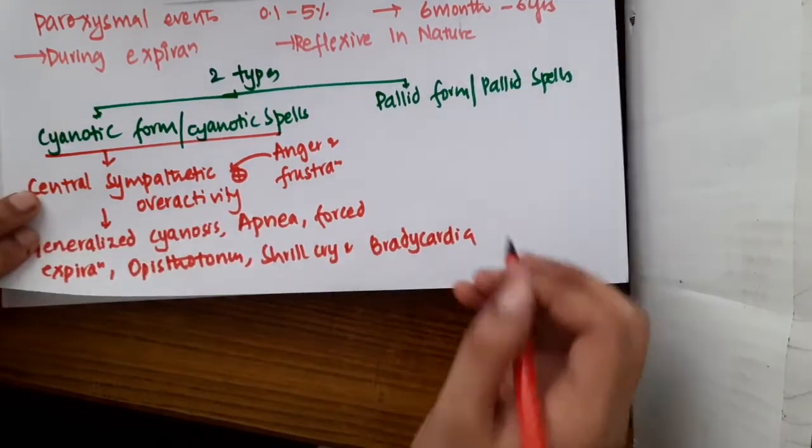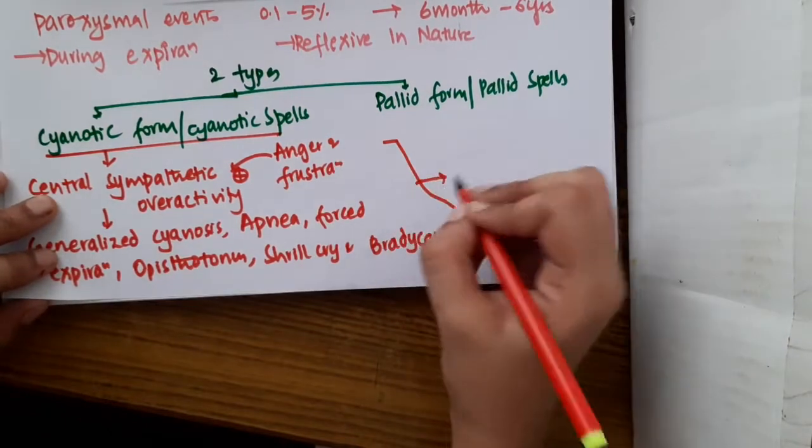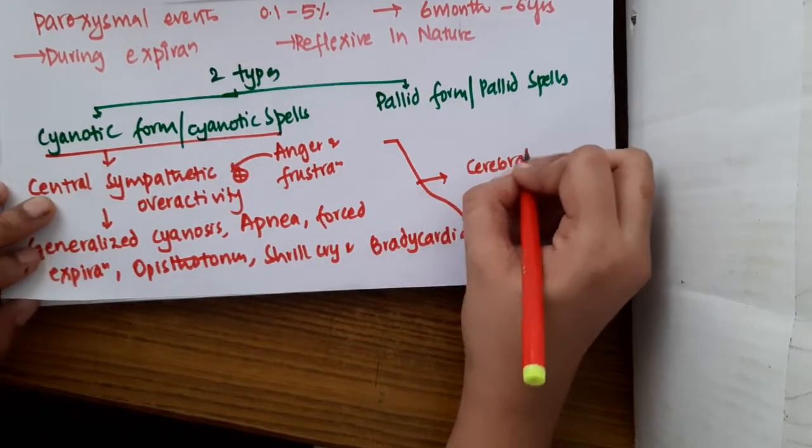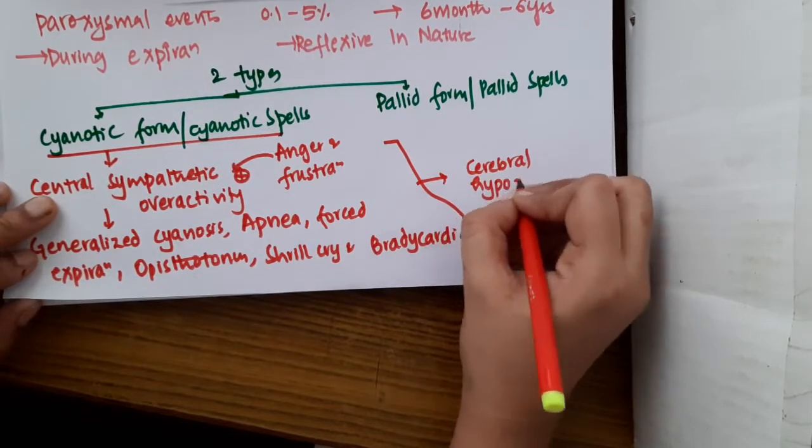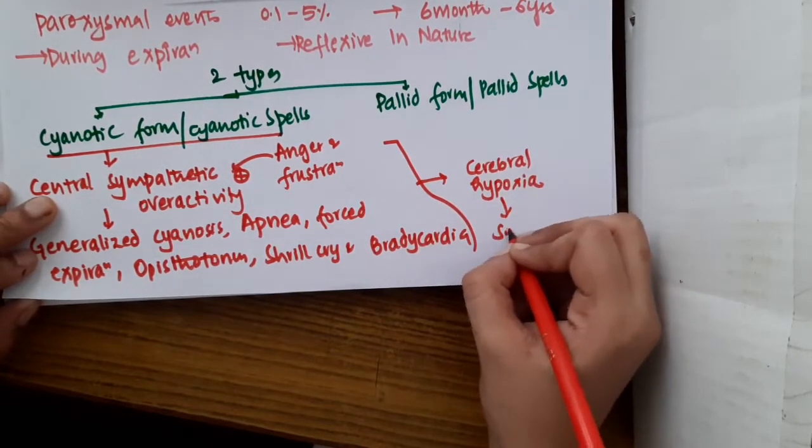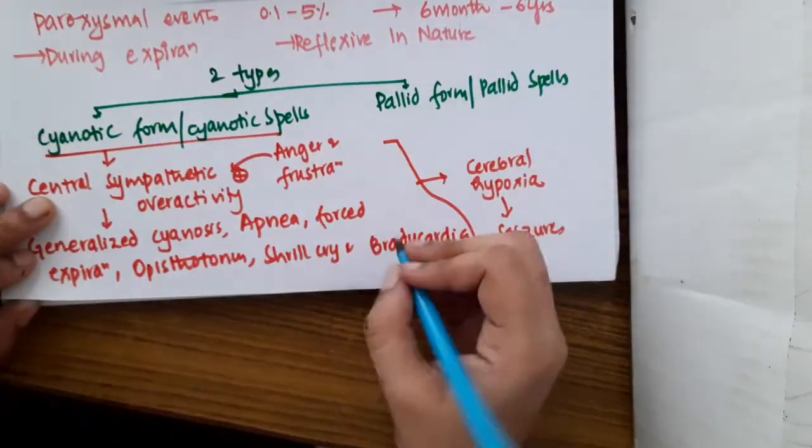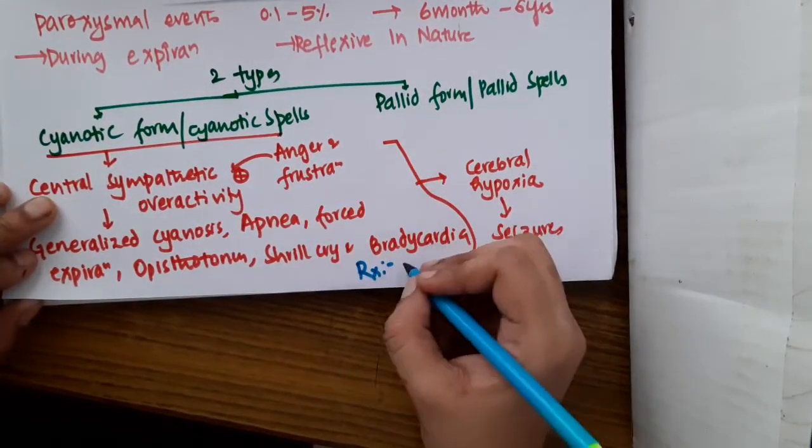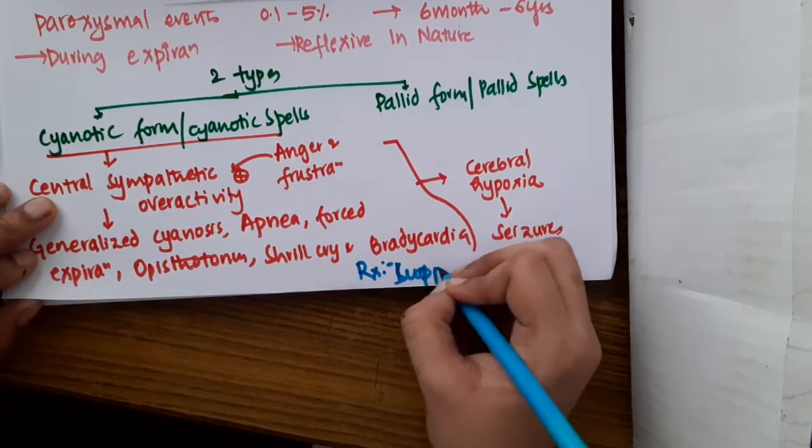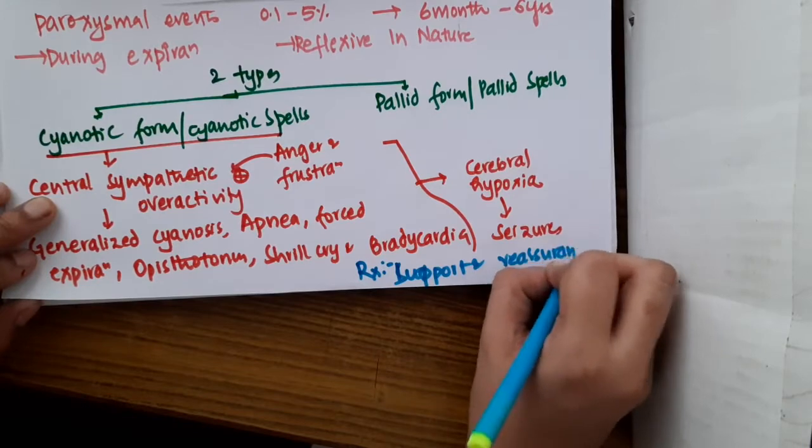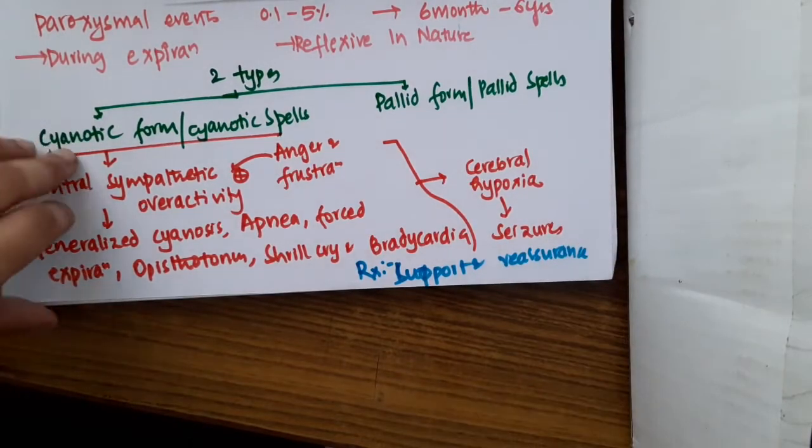So this can also lead to cerebral hypoxia. If there occurs cerebral hypoxia because of the cyanosis, then you will see presence of seizures can also occur in the child. The only treatment that is required in these children is you will have to give support and reassurance to the children. This is cyanotic spells.